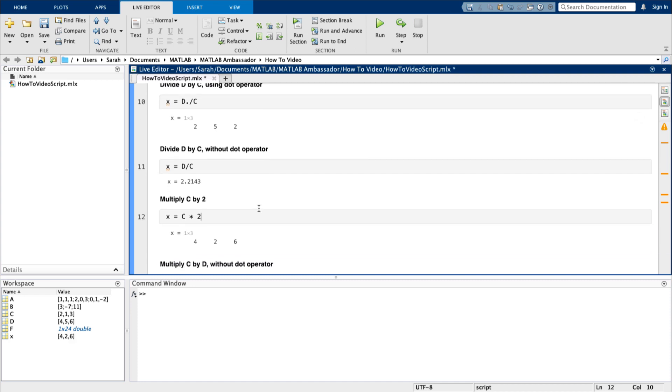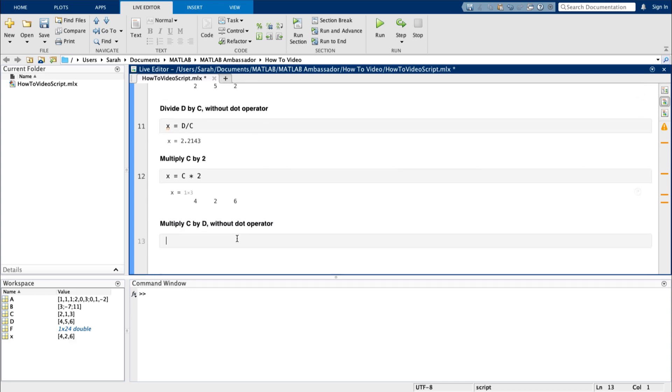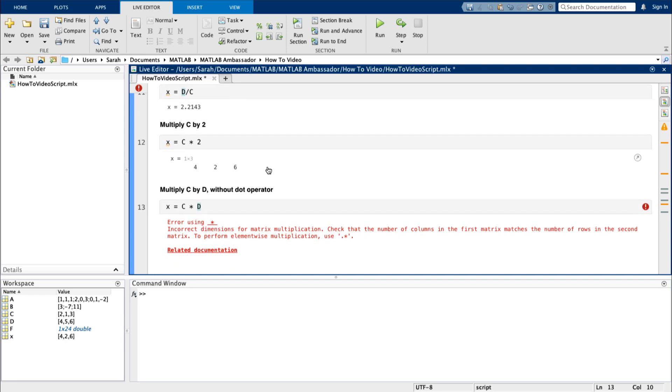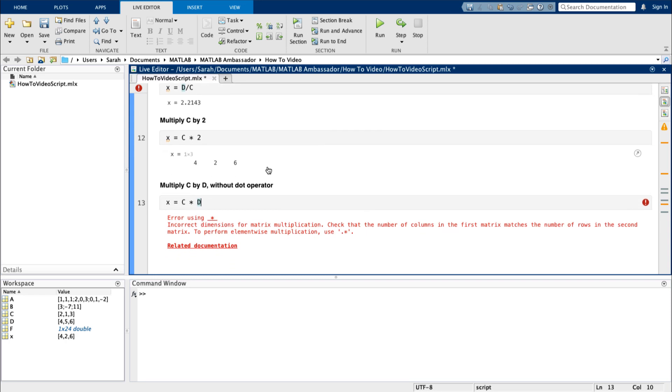But what if I wanted to multiply c by d? I would need the dot operator, since both c and d are vectors. Look what happens if I omit it. This time, I got an error instead of the wrong answer, because these vectors aren't the right size for this kind of matrix multiplication.